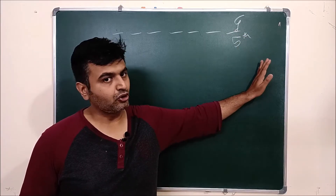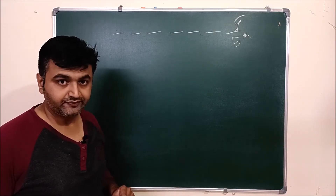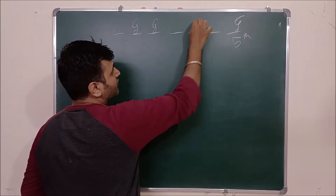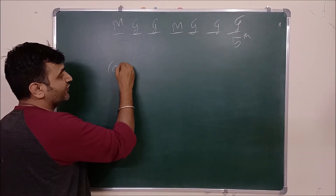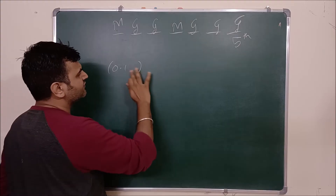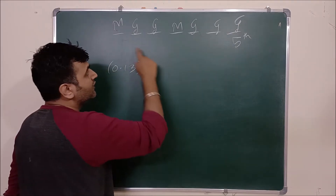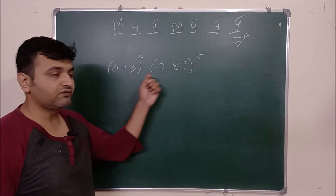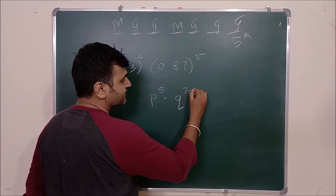After the 5th success at the 7th shot, you stop — you don't continue the experiment. Now, what is the probability that he scores his 5th goal on the 7th shot? The 7th shot is the 5th goal, so in the earlier 6 shots he scored 4 goals and missed 2. The probability of a missed shot is 0.13 and of a goal is 0.87. Since trials are independent, the probability is the product: P raised to 5 times Q raised to 2, where Q = 1 − P, which is 7 − 5 = 2.